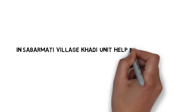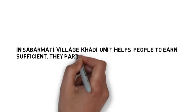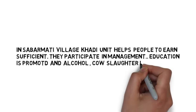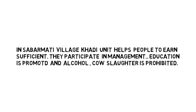To remember the articles serially, I have formed a sentence relating all the basic themes: 'In Sabarmati village, Gandhi's Khadi unit helps people to earn sufficient means — living wage — participate in management (that is Article 43A) — education (upliftment of Scheduled Castes, Scheduled Tribes, and weaker sections) — alcohol (Article 47) — and cow slaughter (Article 48).' The word 'Sabarmati' relates to Mahatma Gandhi, and each word maps to successive articles starting from Article 40.